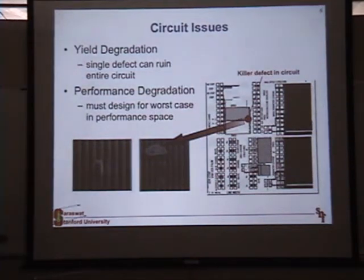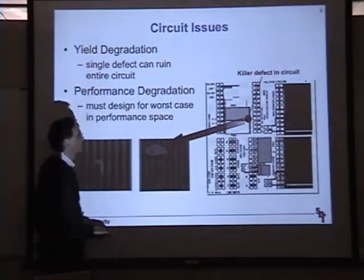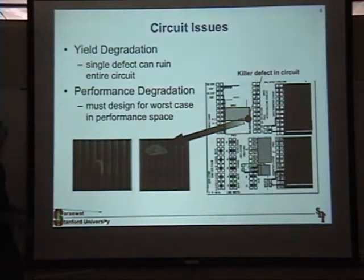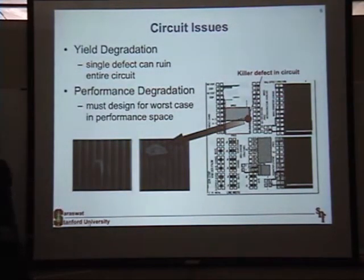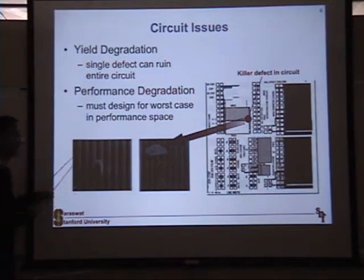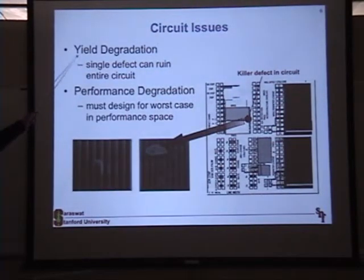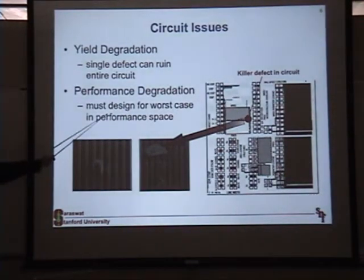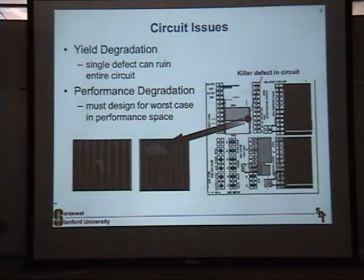As a circuit issue: what is shown here are metal lines blown up from part of a chip. These metal lines are supposed to be distinct. If a big particle falls before you do the etching, that particle will act like photoresist and the metal did not get etched — you have shorts. Yield degradation: a single defect can ruin the entire circuit. Even if it does not ruin the circuit, performance gets degraded — the line may be thinner, having more resistance, or the capacitance changes.